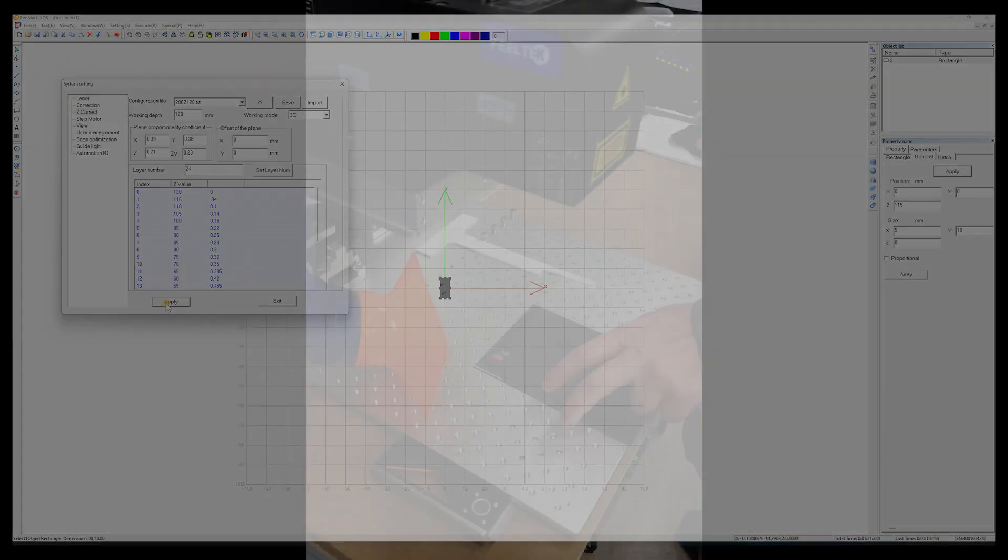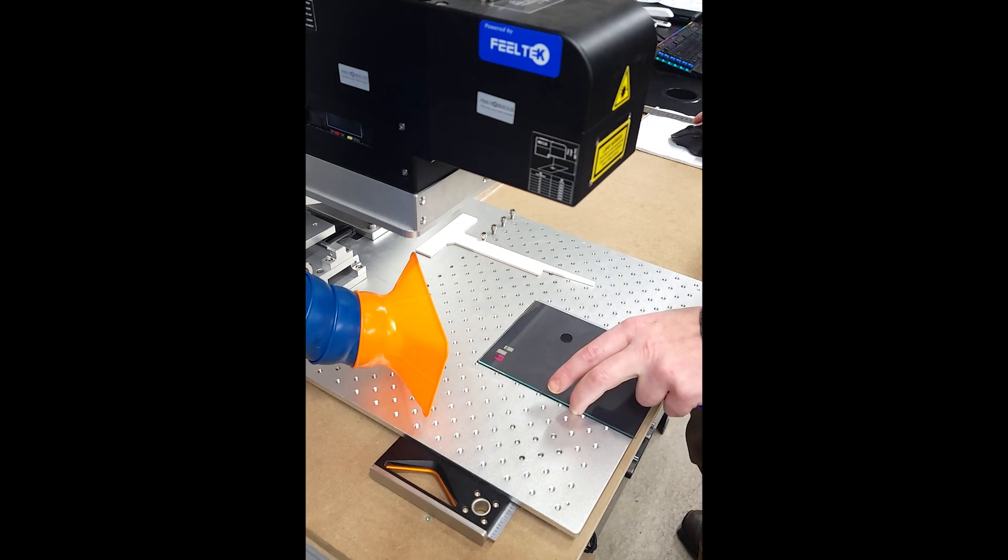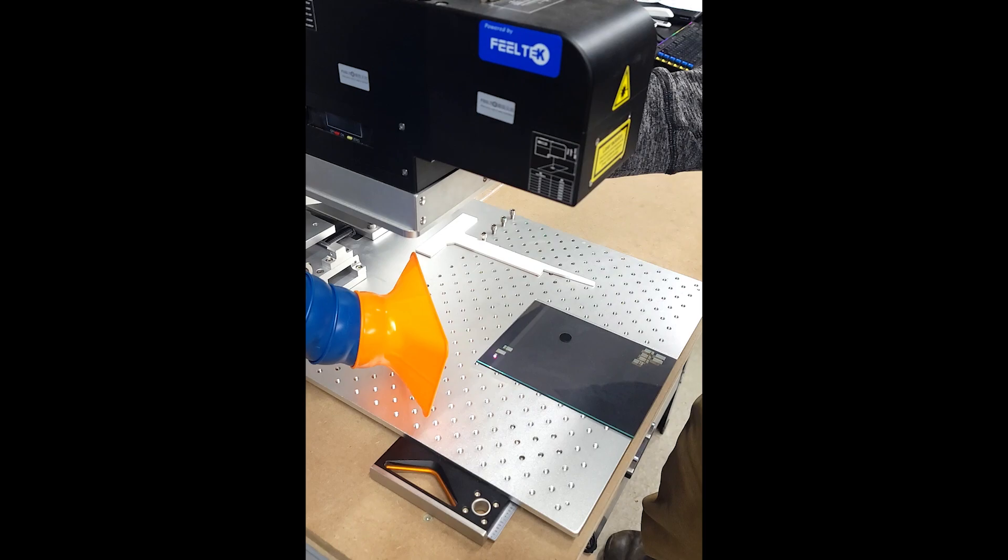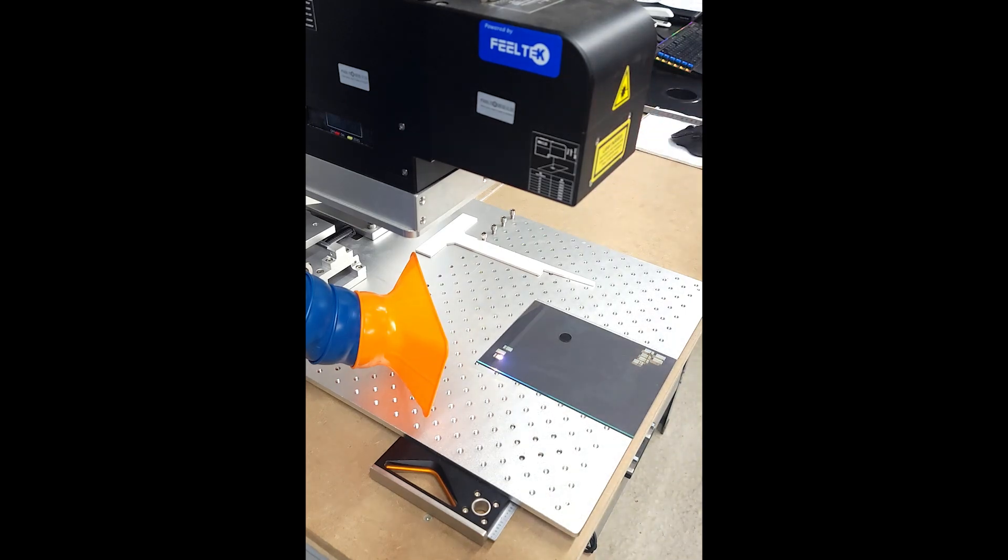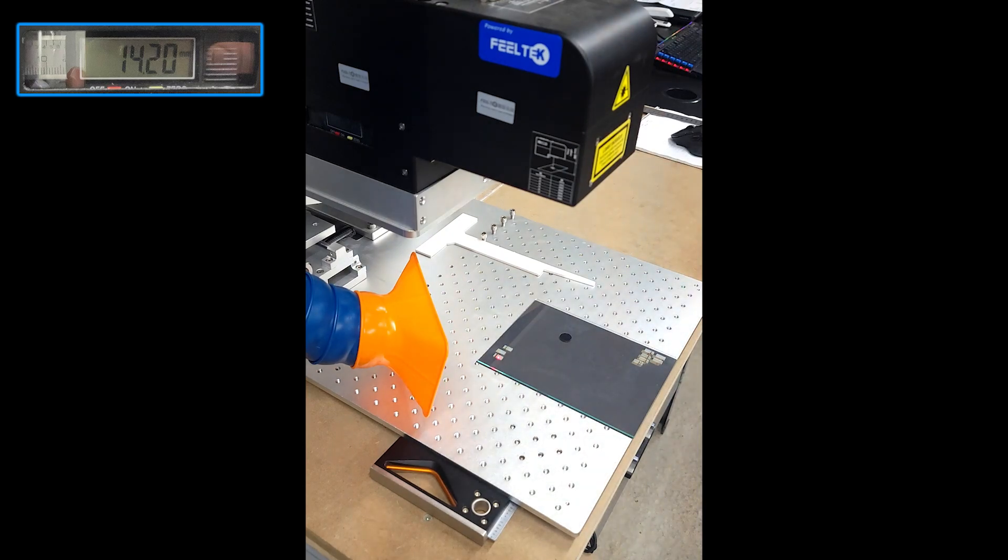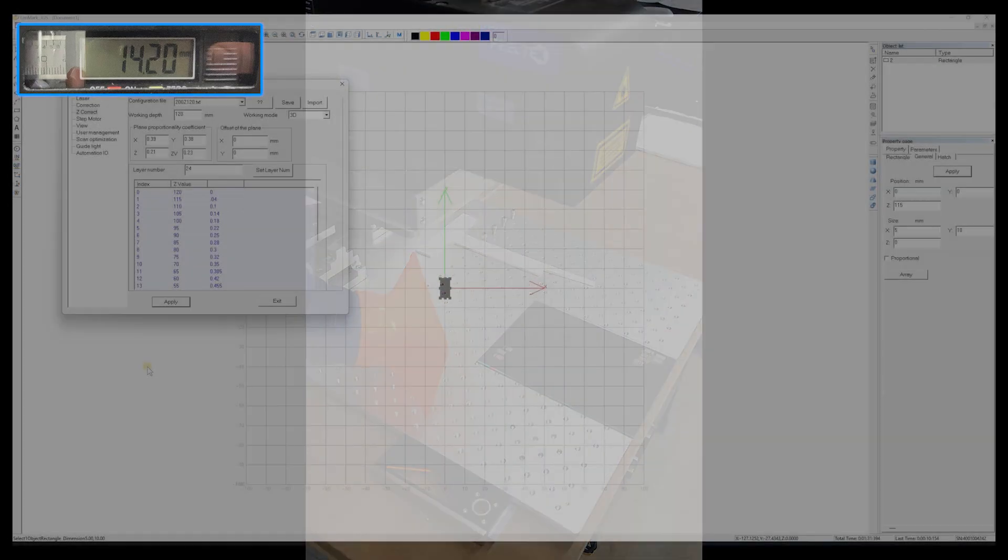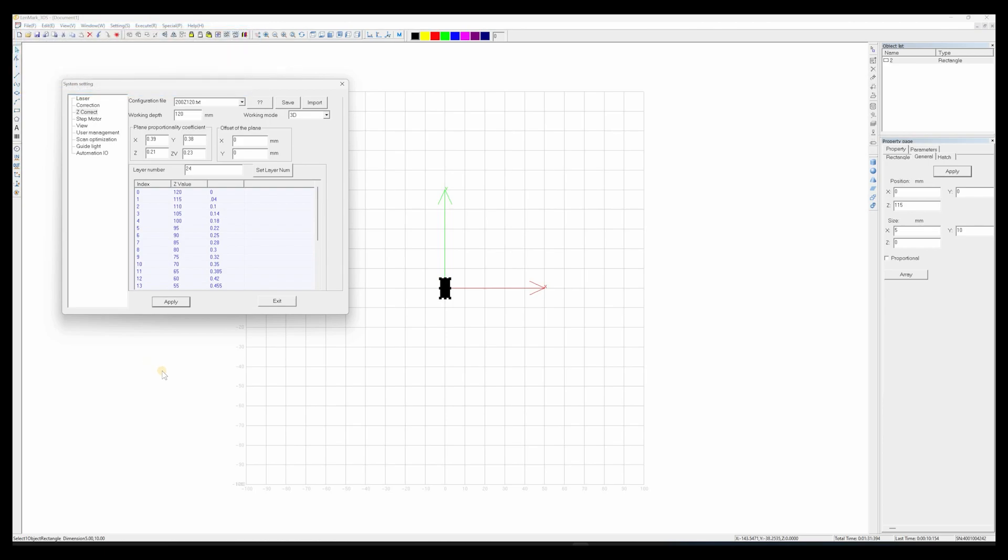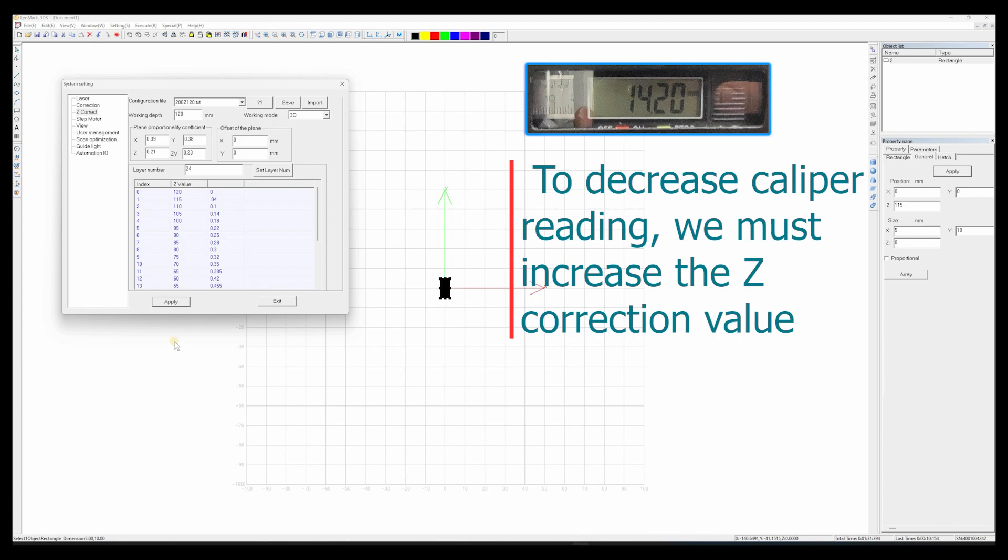Back over to the laser. And we're going to run it again and adjust our fine focus knob while we're doing it. There we are. So now we're at 14.20. We're a little bit high. So to lower that caliper value, we need to raise our Z value. Let's try 0.05.